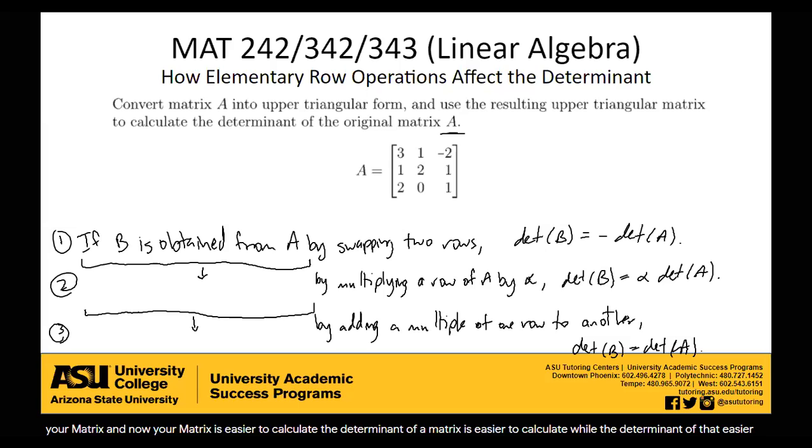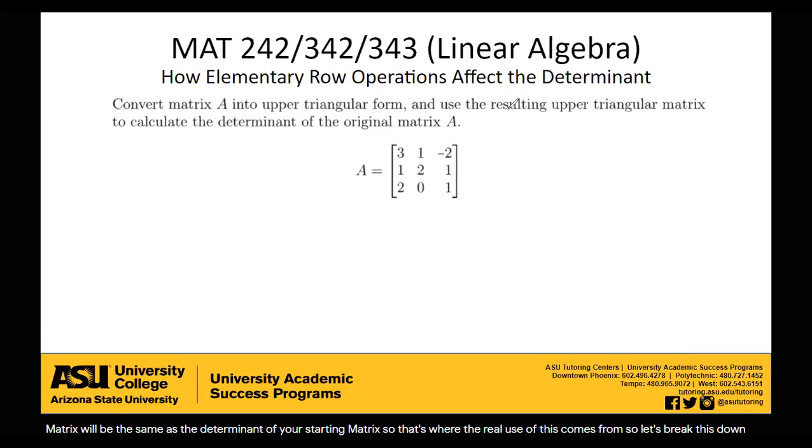So let's break this down. Let's apply these ideas to our matrix here. So we're trying to calculate the determinant of A, and how we're going to do it is we're going to do some row operations to get our matrix A into upper triangular form. So for every row operation we do, we want to keep track of how it's going to affect our determinant. So we're starting over here with matrix A. One, two, one.